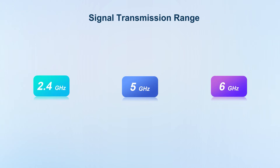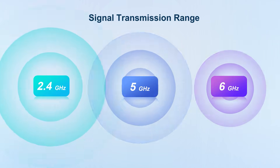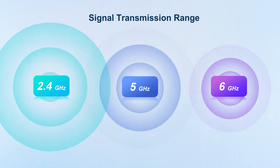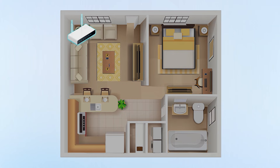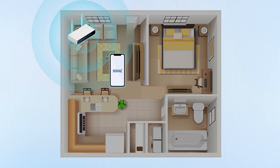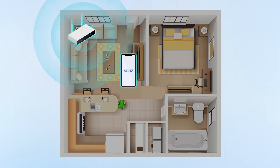So while 5 GHz and 6 GHz have faster transmission speeds, their signal transmission range is not as wide as 2.4 GHz. For example, if your router is in the living room and you are also in the living room, you can choose the 5 GHz band, which has strong anti-interference ability and fast speed.